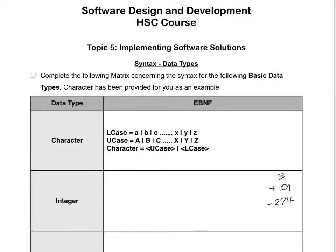The first thing I'm going to do is define what a digit is, because I know that an integer is made up of digits. So a digit is defined as either a 0, or a 1, or a 2, or a 3, or a 4, or a 5, or a 6, or a 7, or an 8, or a 9. And that's it.